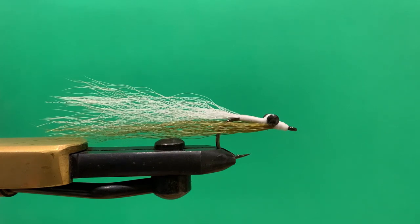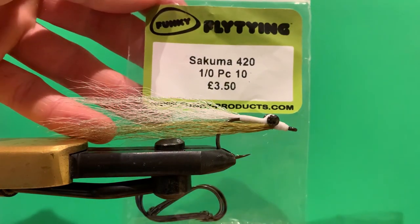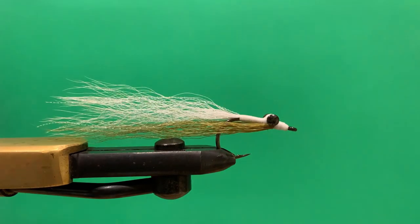For the materials, first off the hook. I like a short shank. I'm going to be tying on a Sakuma 420 here. You can tie on a long shank if you prefer—it's really just personal preference.